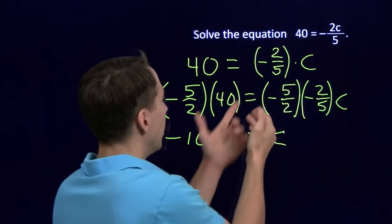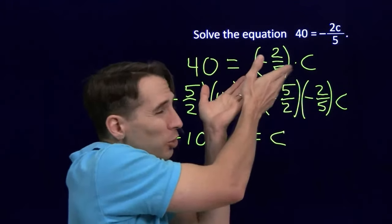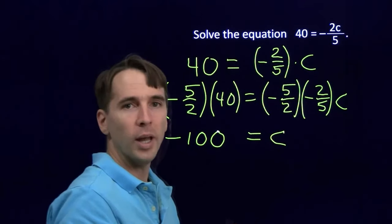All in one step. We have a constant times a variable. We just multiply it by the reciprocal of the constant. And away it goes.